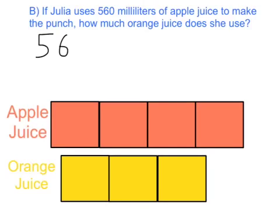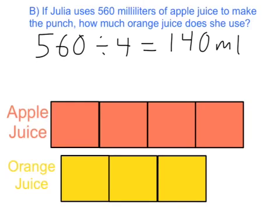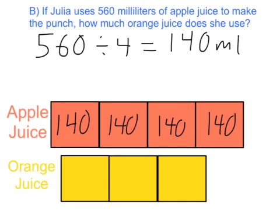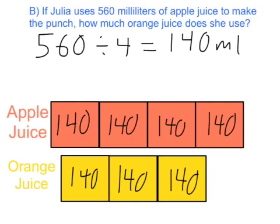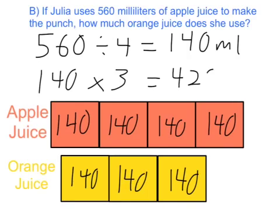We are going to divide 560 by 4. If this is all 560 milliliters, then one part will be one fourth of 560, or 560 divided by 4. That equals 140 milliliters per unit — each one of these is 140 milliliters. So how much orange juice does she use? The problem becomes obvious once we have this model: she uses 140 times 3 milliliters of orange juice, and that is 420 milliliters.